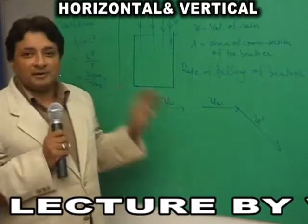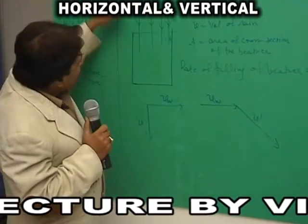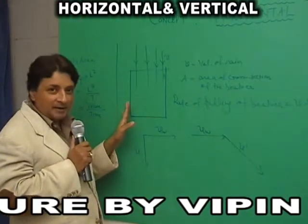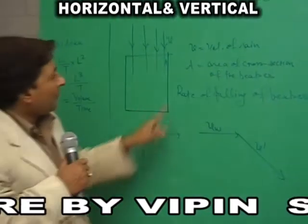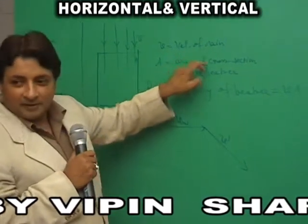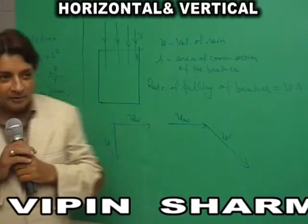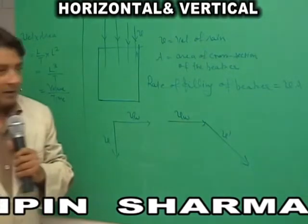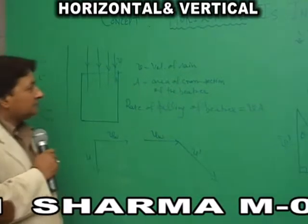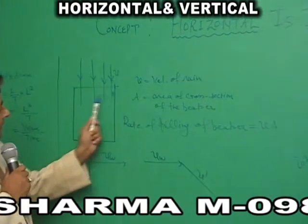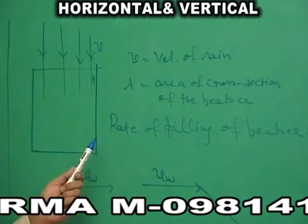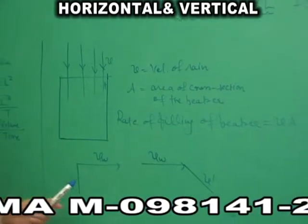For the sake of our concept we are assuming like that, students. It is raining vertically because no horizontal wind is there. Rain is falling with the velocity V — V is the velocity of rain. A is the area of cross section of this beaker.